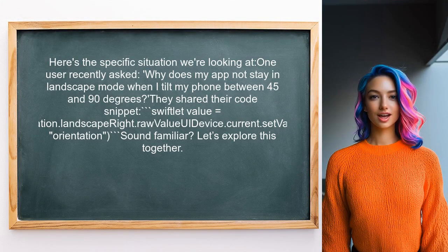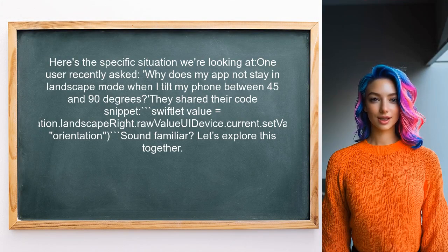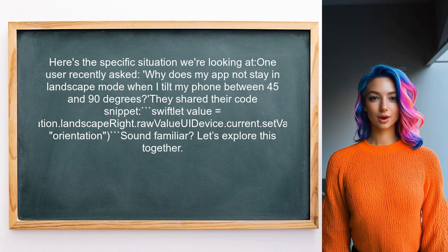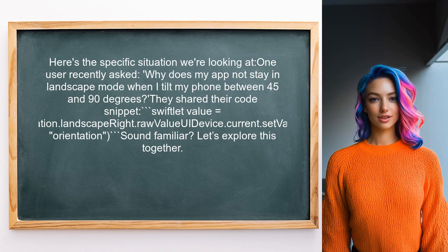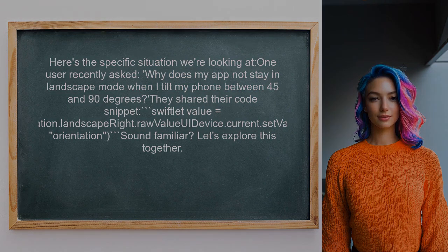Let's take a closer look at the specific question at hand. One user recently asked: why does my app not stay in landscape mode when I tilt my phone between 45 and 90 degrees? They shared their code snippet, which seems correct, but the behavior is not as expected. Sound familiar? Let's explore this together.